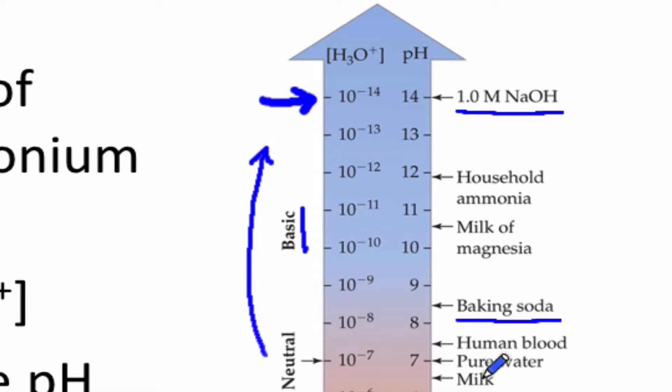Now, the scale runs from 0 to 14, but one thing I want to impart is that we can achieve pHs larger than 14. There's no law of nature that says we can't have a hydronium ion concentration less than 10 to the negative 14. That's, on some level, an arbitrary cutoff. Three molar sodium hydroxide solution, for example, is going to have a pH greater than 14.